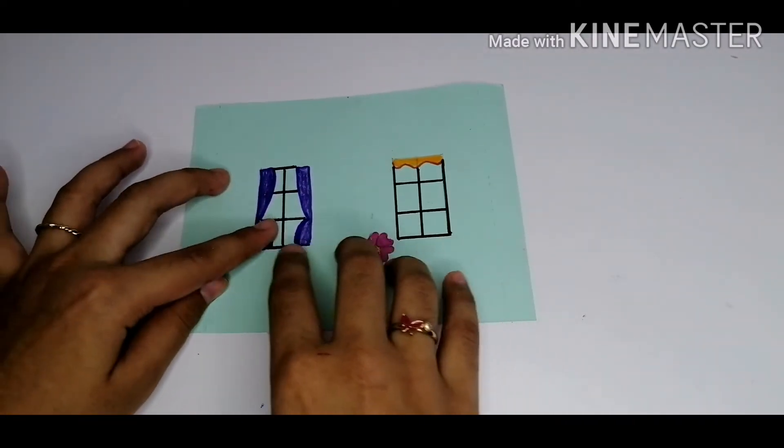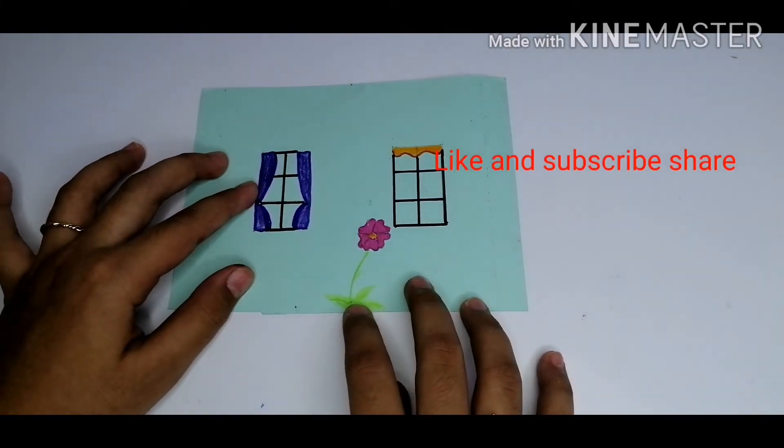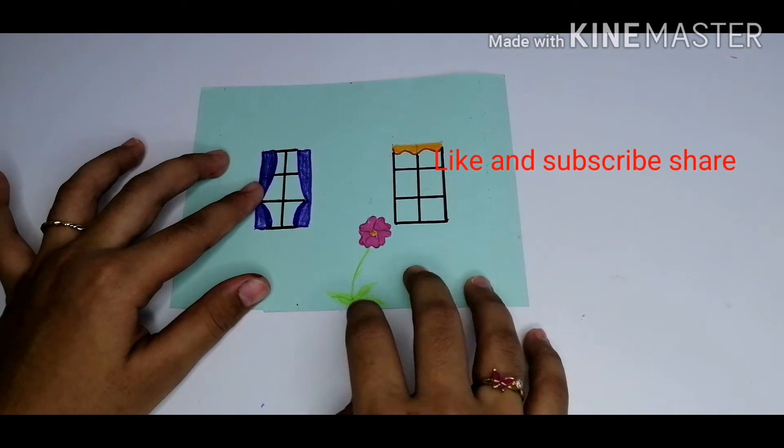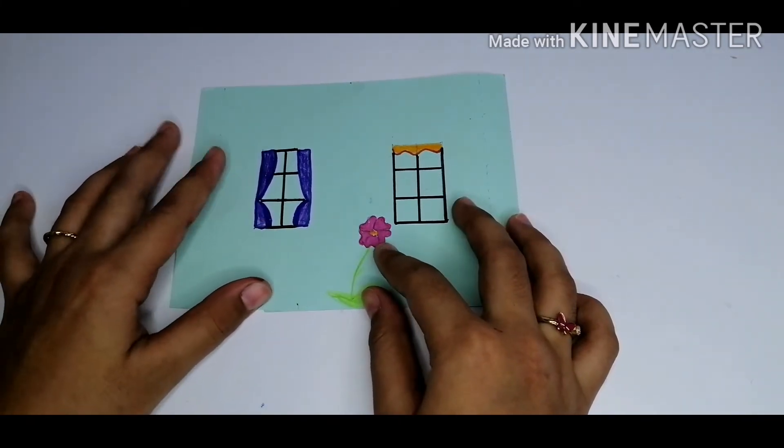Here also I have added some colorful curtains, and I have drawn the other side of the house. I have drawn the little cute flower. I thought it would look more beautiful.